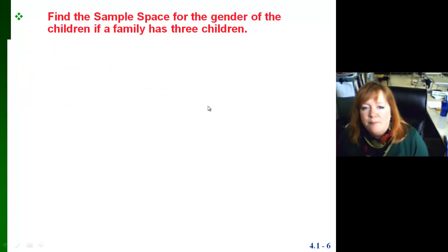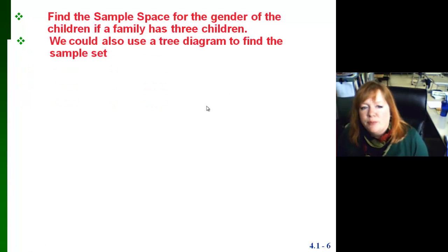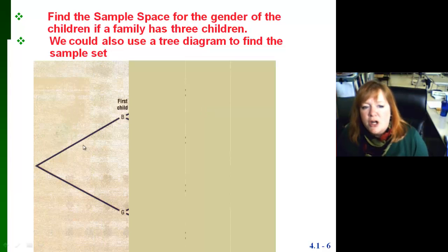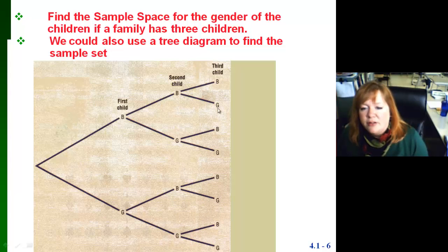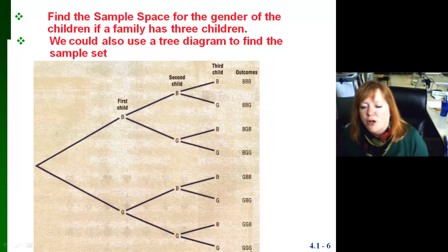If you get stuck, a tree diagram can help. Starting out with the first child — it could be a boy or a girl. Then from each of those, you could have a boy or a girl for the second child, and a boy or a girl for each possibility for the third child. Following along the branches of the tree, you could have boy-boy-boy, boy-boy-girl, boy-girl-boy, and so on — giving you all your outcomes and the total sample set.